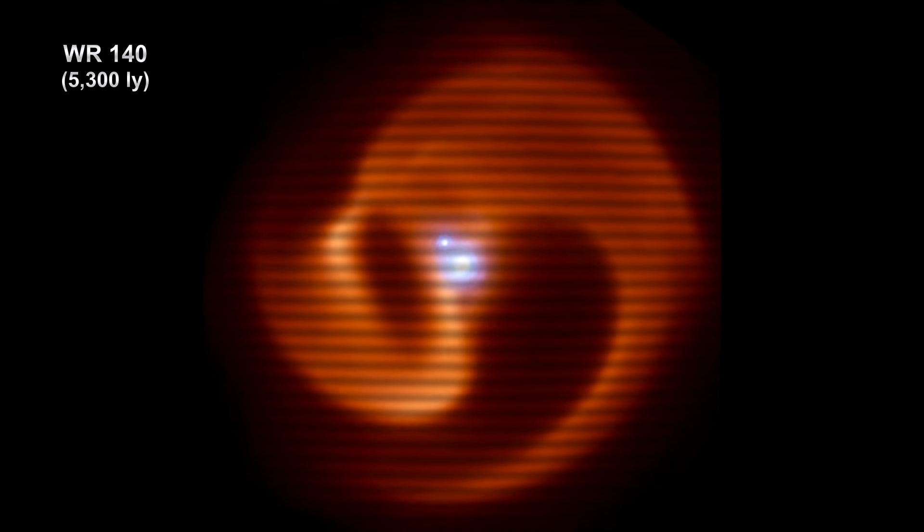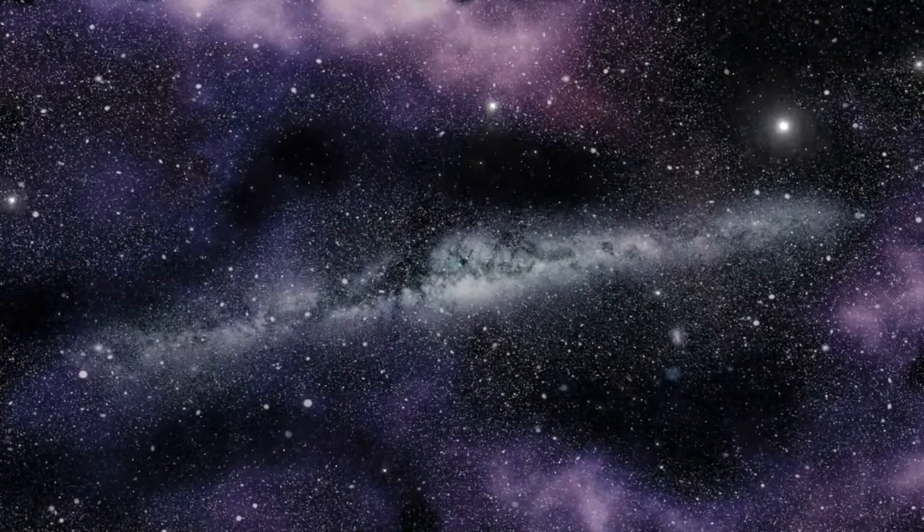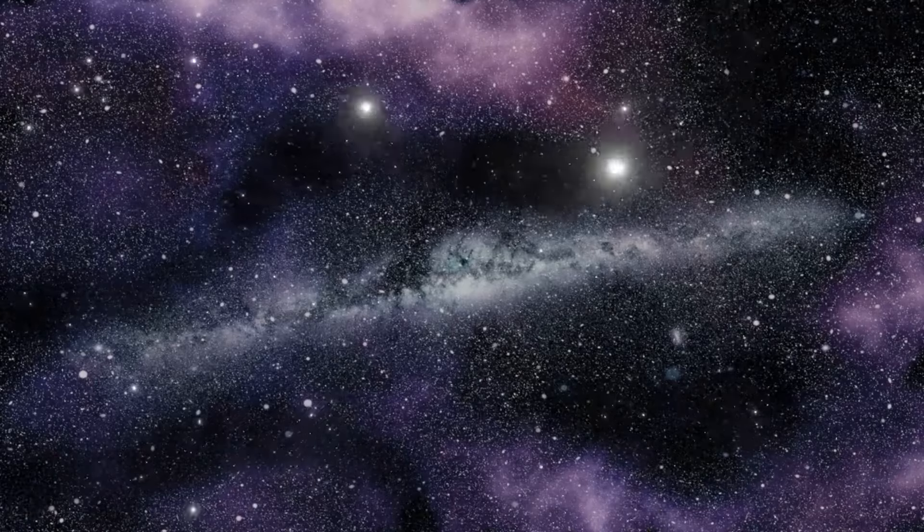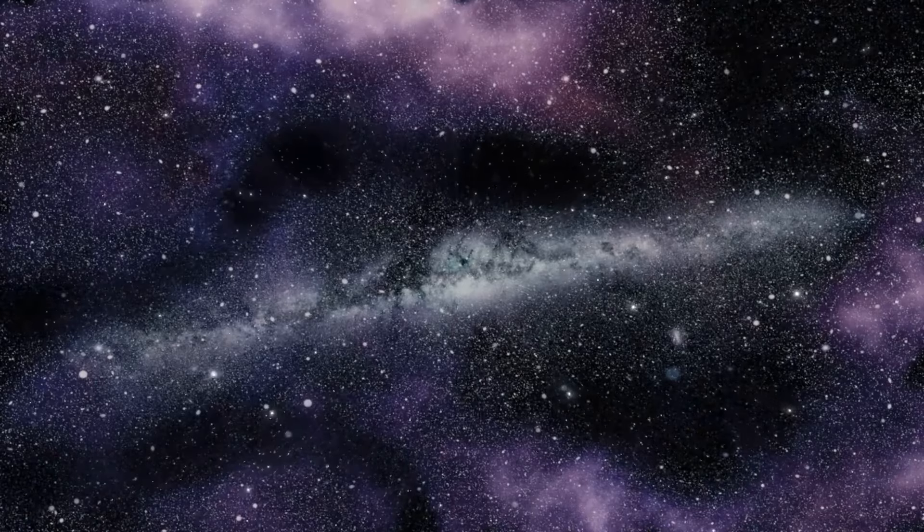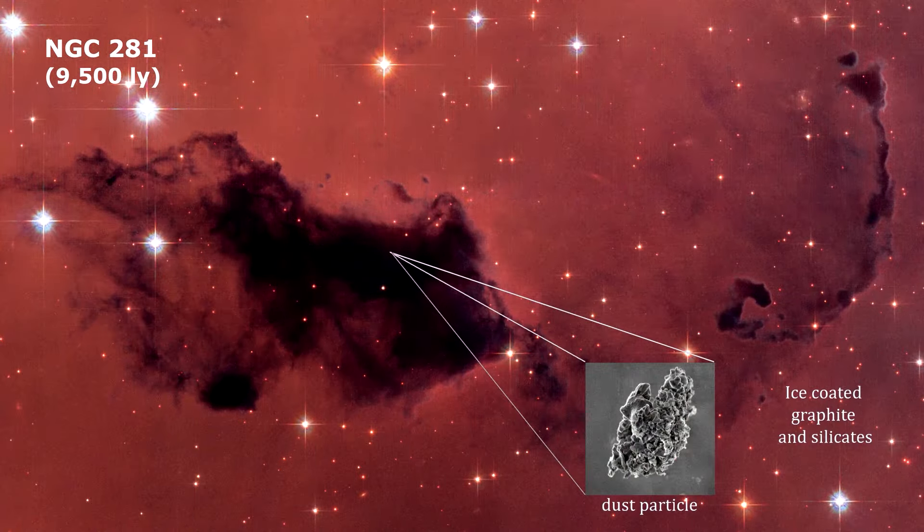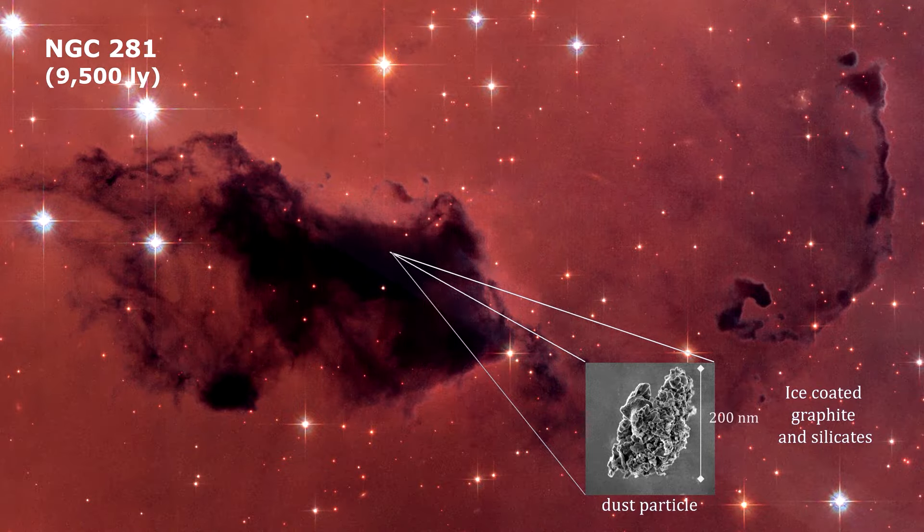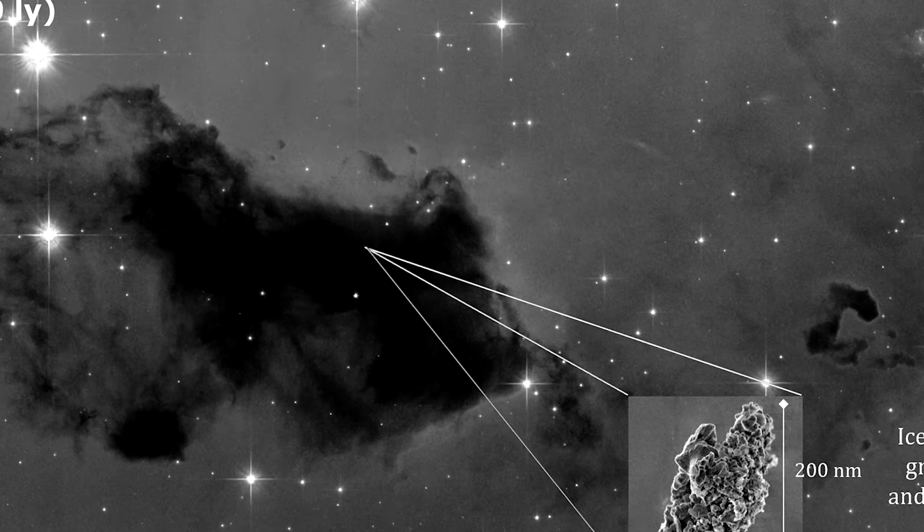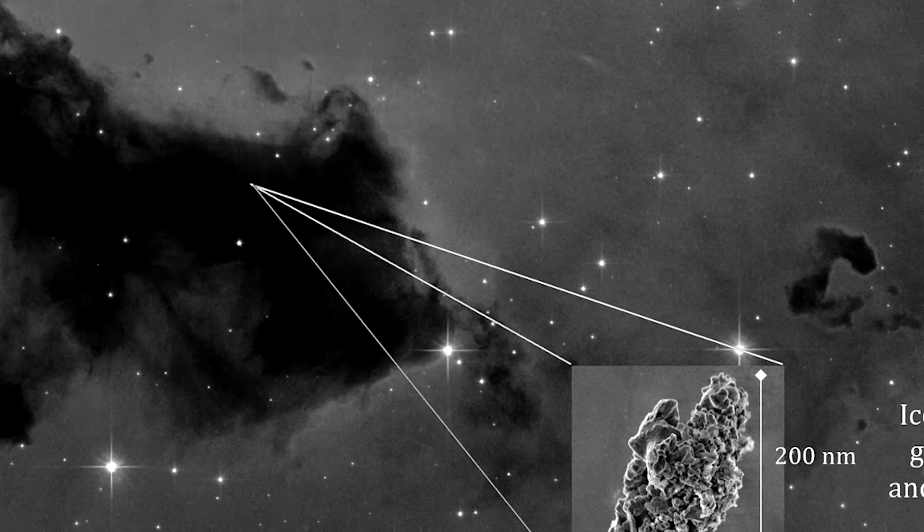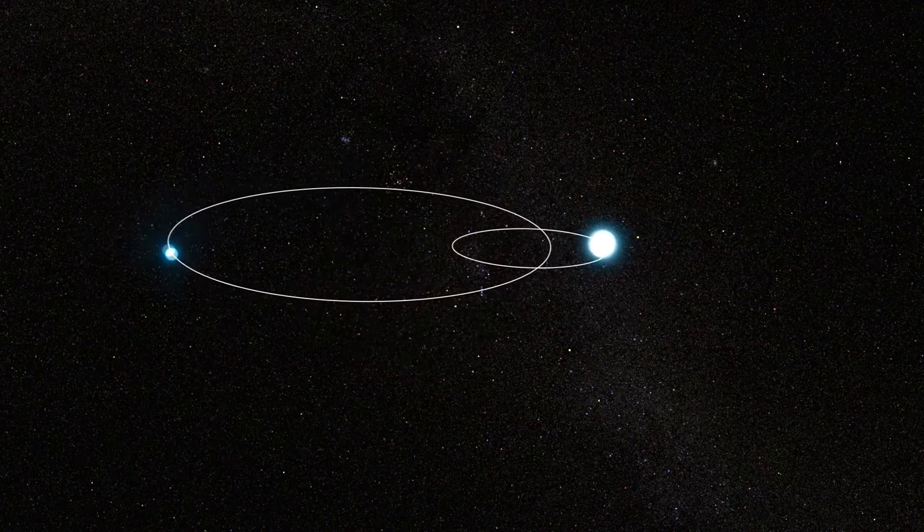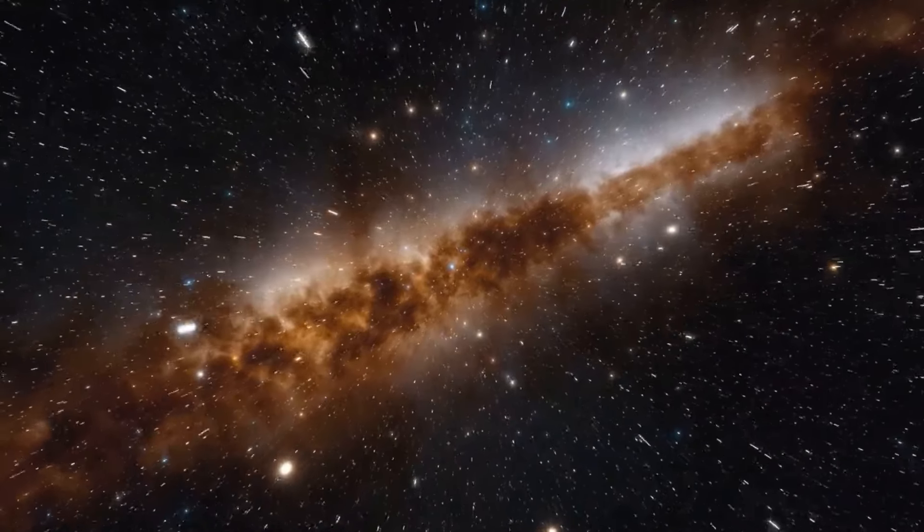Wolf-Rayet stars are massive stars nearing the end of their lives, having already released much of their hydrogen into space. The strangely shaped rings around WR-140 are caused by the interaction between this star and its smaller companion star. The stars are surrounded by a cloud of dust, which the companion star sculpts into a unique shape. The discovery of these concentric rings around WR-140 is not only visually stunning, but also provides valuable insights into the life cycles of massive stars and the complex interactions between them, and it's fascinating to see how these interactions can shape the dust and gas in space into such intricate patterns.